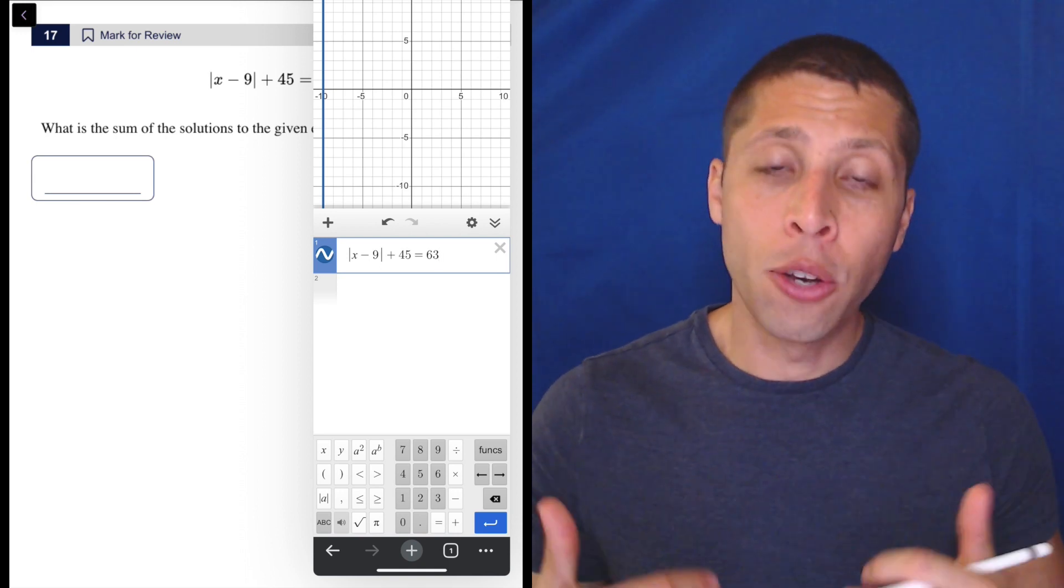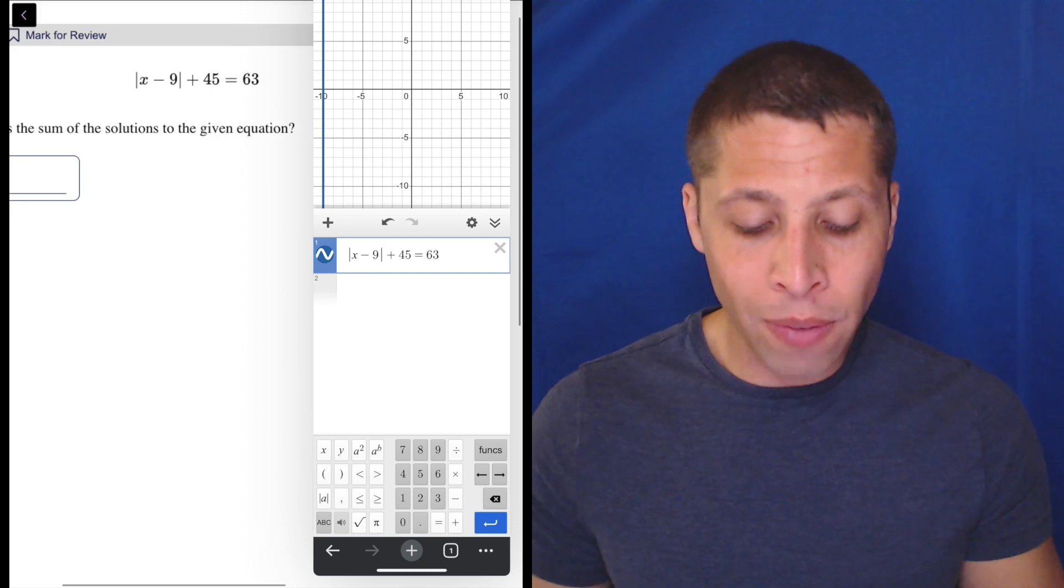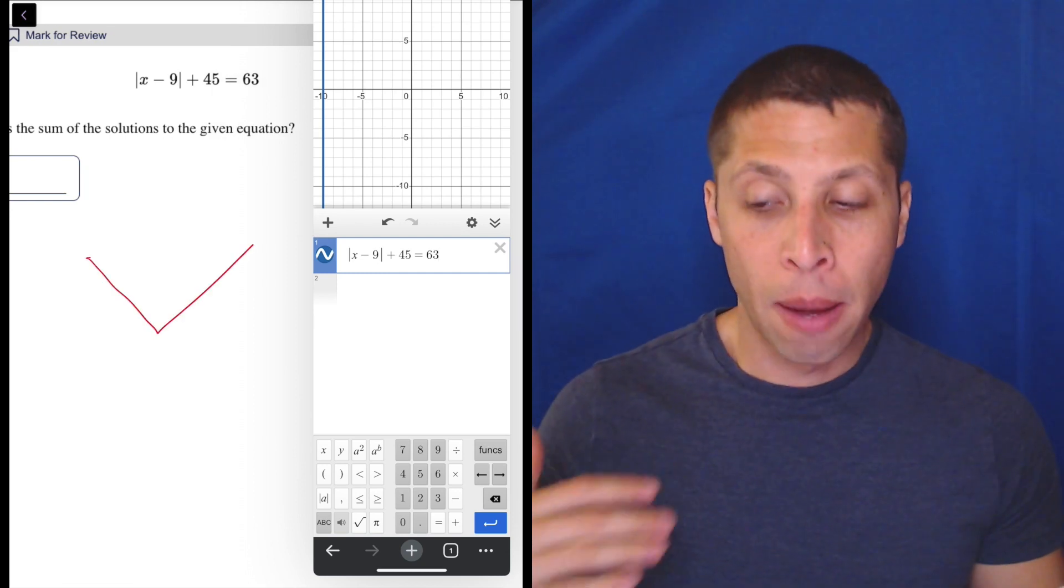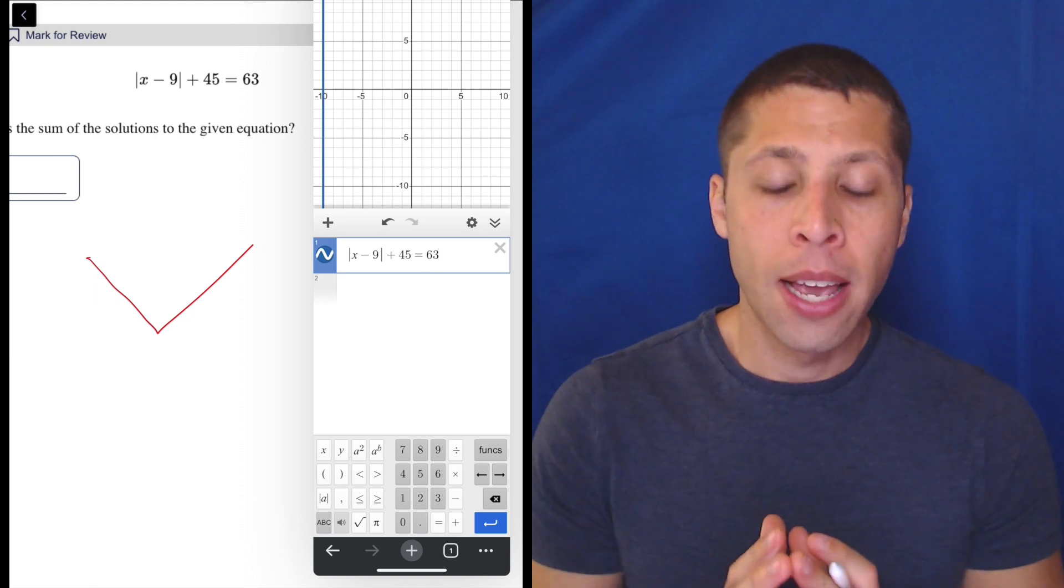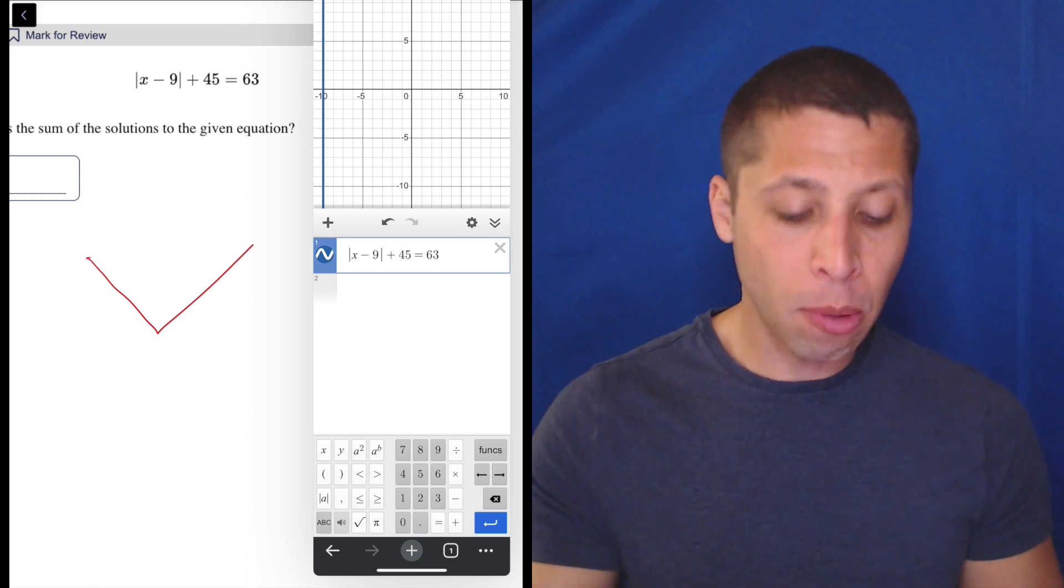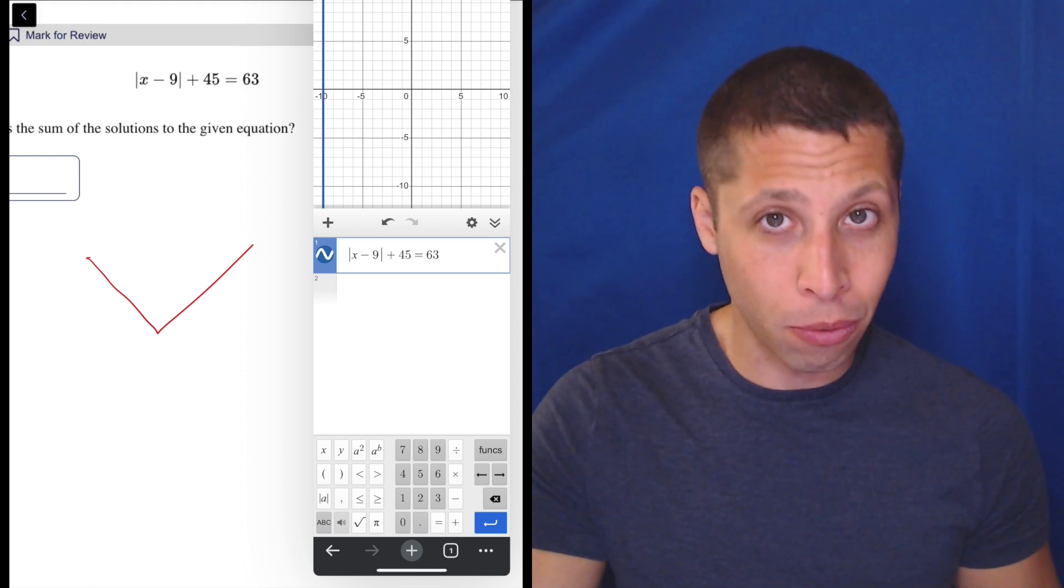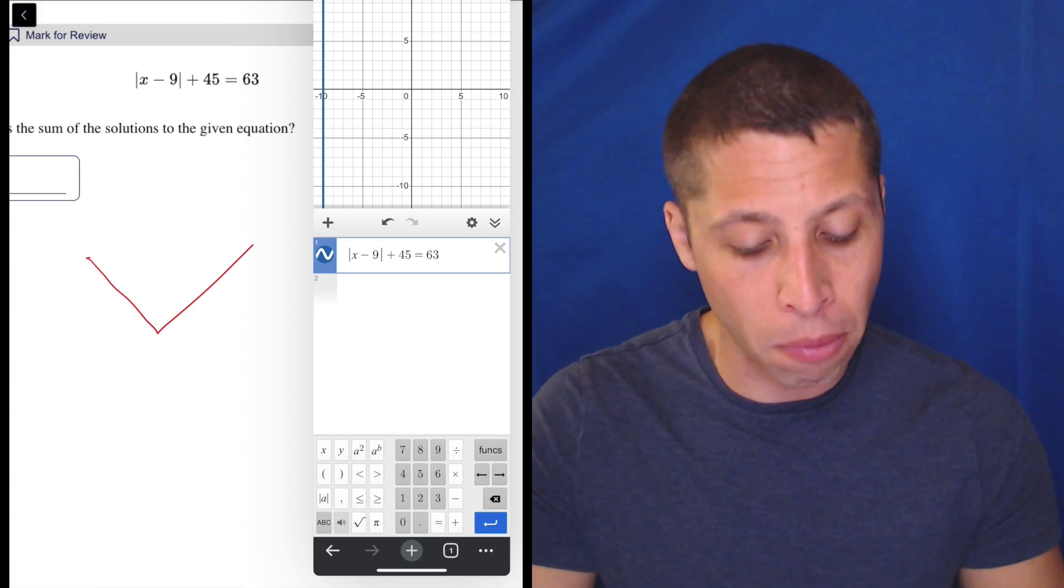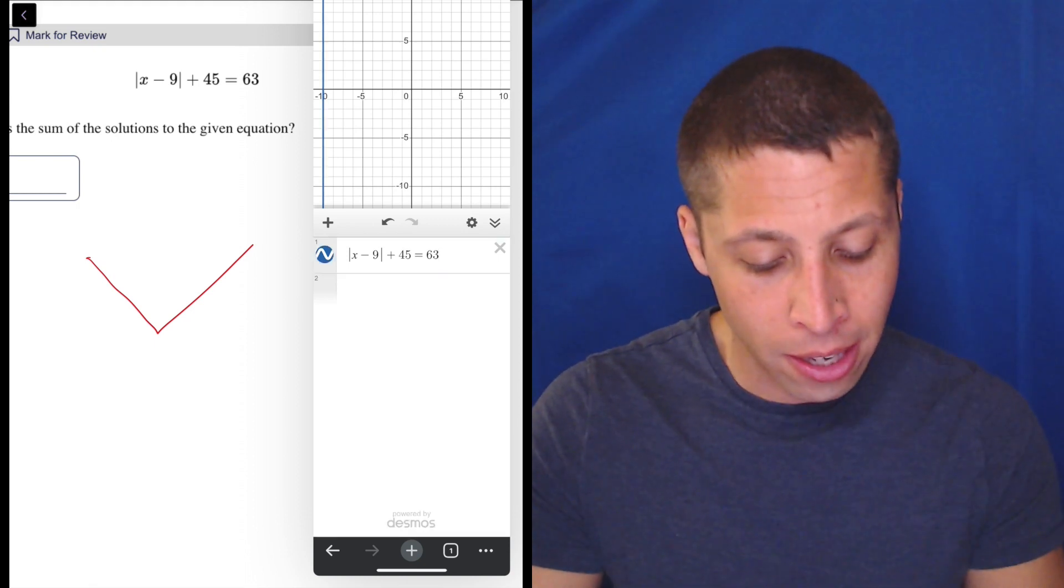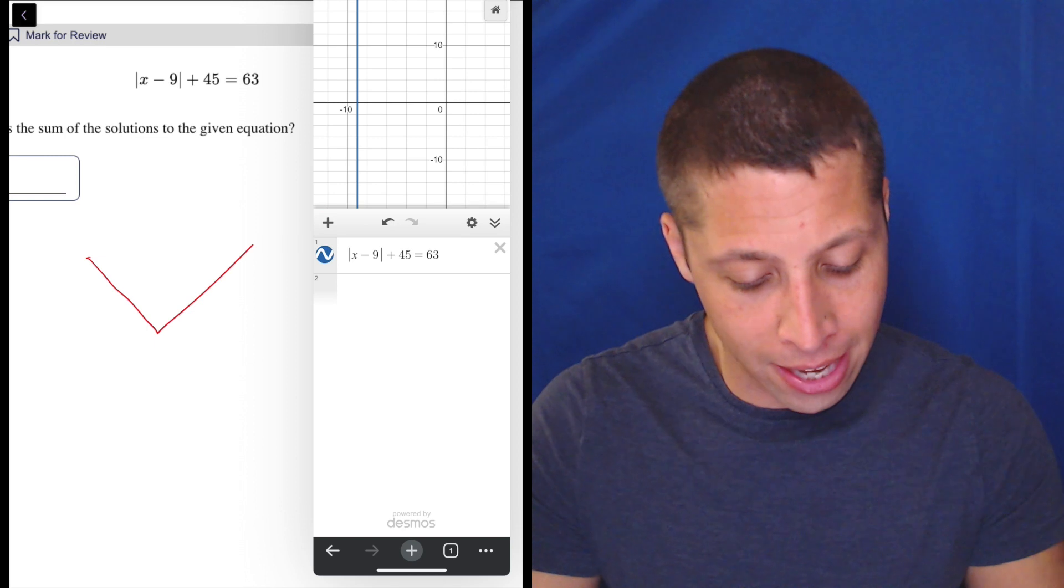Now, you might remember that normally, absolute value equations make those kind of V shapes. They kind of bounce somewhere, but that's not going to happen here because this is not a Y equals equation. This equation only has the one variable, so what Desmos is going to do is it's going to solve this equation for us, and it's going to give us the solutions in the form of vertical lines. So you can see one of them is just on the edge of my calculator there. It looks like negative 10, and nope,